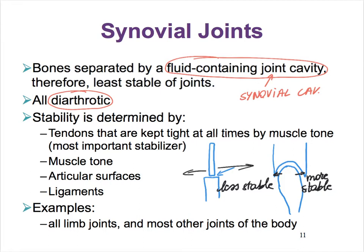The most important factor for stability in synovial joints is muscle tone. Muscle tone is what makes our synovial joints the most stable. What do we mean by muscle tone? We'll learn in much greater detail when we get to the muscle chapter.